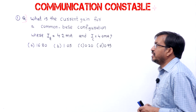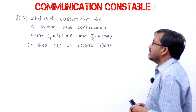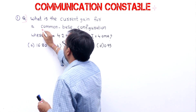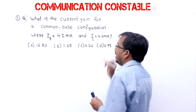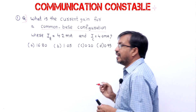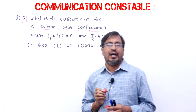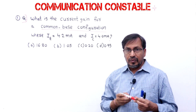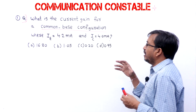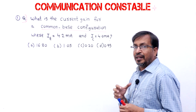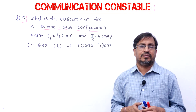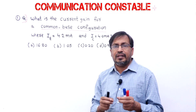Students, so the first question: What is the current gain for a common base configuration where IE equals 4.2 milliamperes and IC equals 4 milliamperes? This is a very easy question for electronics students. There are different branches and trades, and they all have to understand this subject easily.